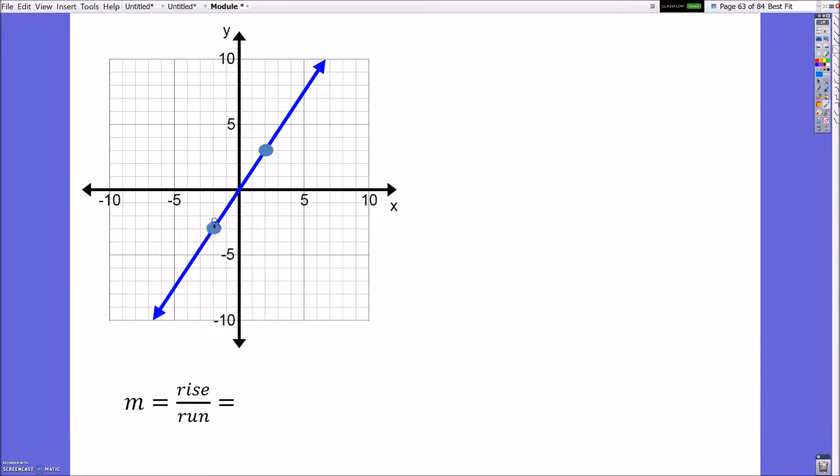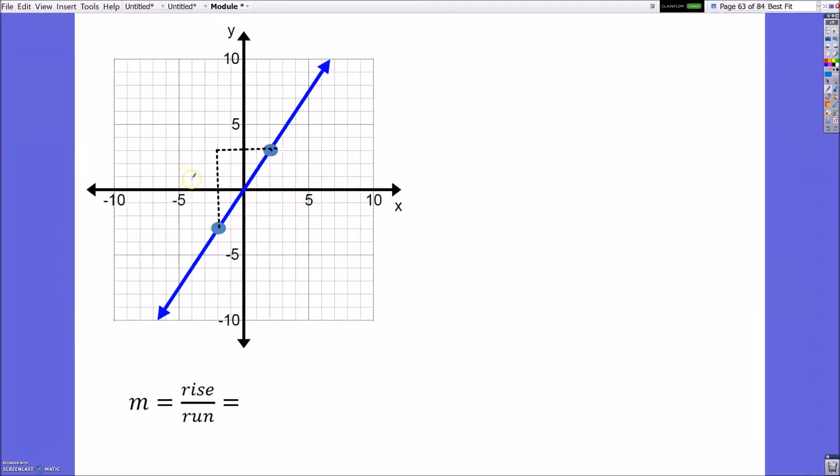If I started here and I counted up, I'm going up 1, 2, 3, 4, 5, 6 spots. And then over here, I would go to the right, from right here,